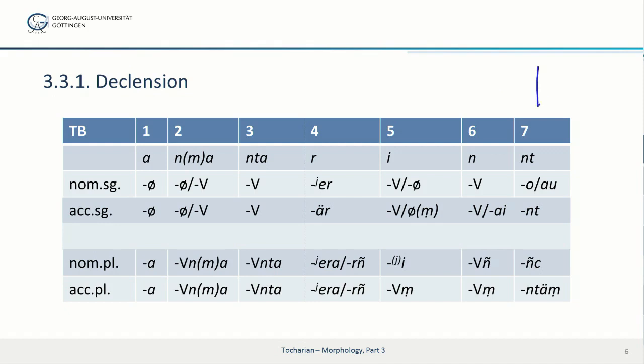And now finally we turn to class seven. This is the -nt class. Here we find o or ā in the nominative singular and -ṃṭ in the accusative singular. In the plural of this class we have -ñ in the nominative singular and -ṃṭ in the accusative plural.